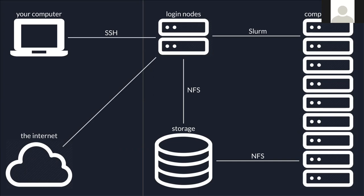Because we only have four login nodes and about a thousand users, you should do your computing on the compute nodes. It's fine to do things like tarring, zipping, and moving data on the login nodes, but any heavy computing will be killed. We have a one-hour CPU time limit on login node processes. Things like gzip, rsync, and moving files are exempted, but real number crunching won't work — submit your computing via a job.